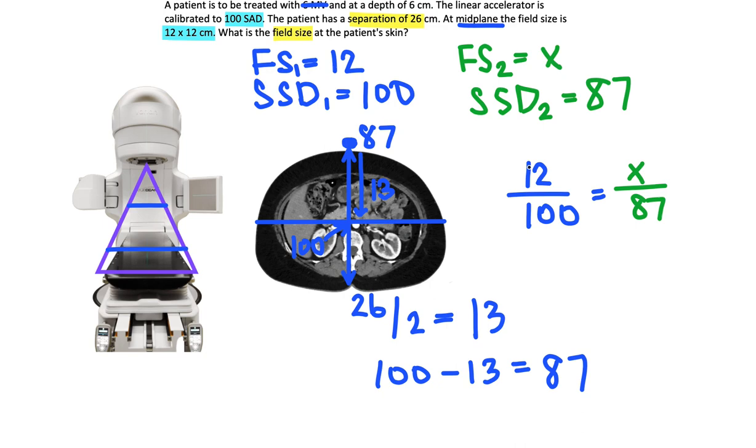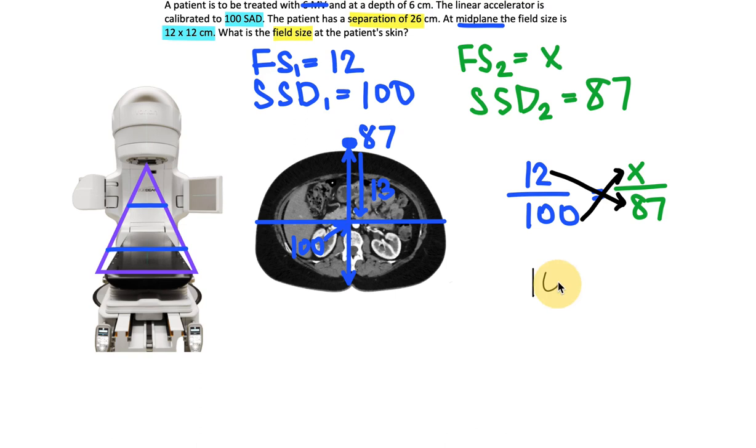Now with direct proportions, we need to solve for X. We need to cross multiply. We can do 12 times 87 and then 100 times X. It doesn't fully matter which side of the equal sign you put either one on because it will solve the same way. When we do 12 times 87, I get 1044. On the other side, I'll do 100 times X. Next, to get X by itself, we divide both sides by 100. If I do 1044 divided by 100, I'll get 10.44.